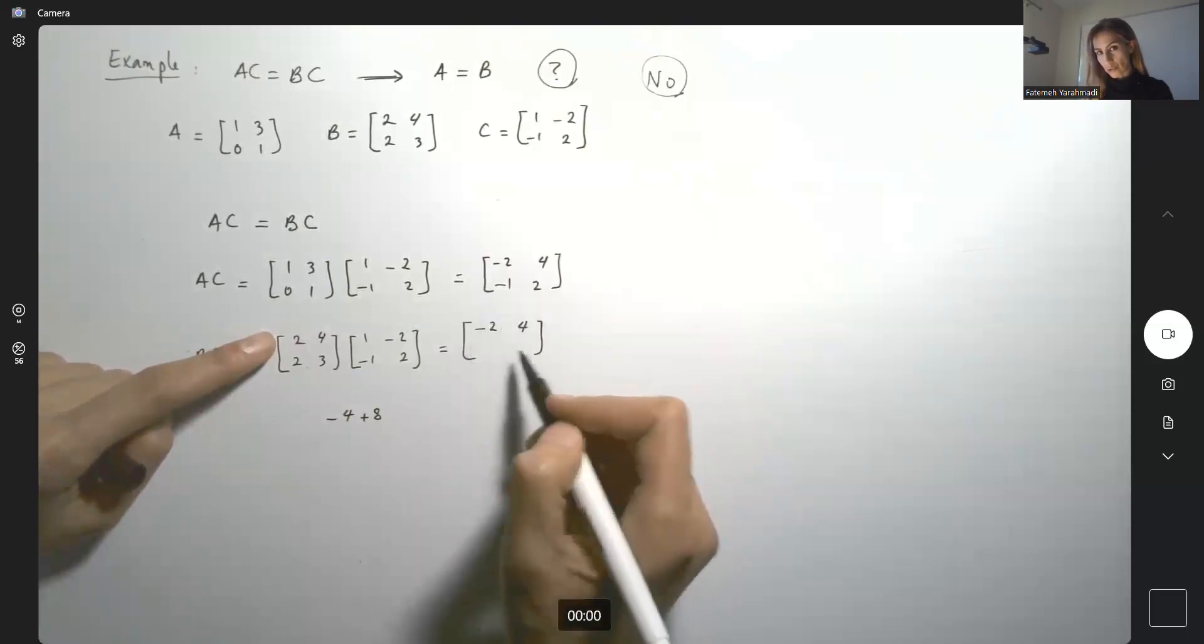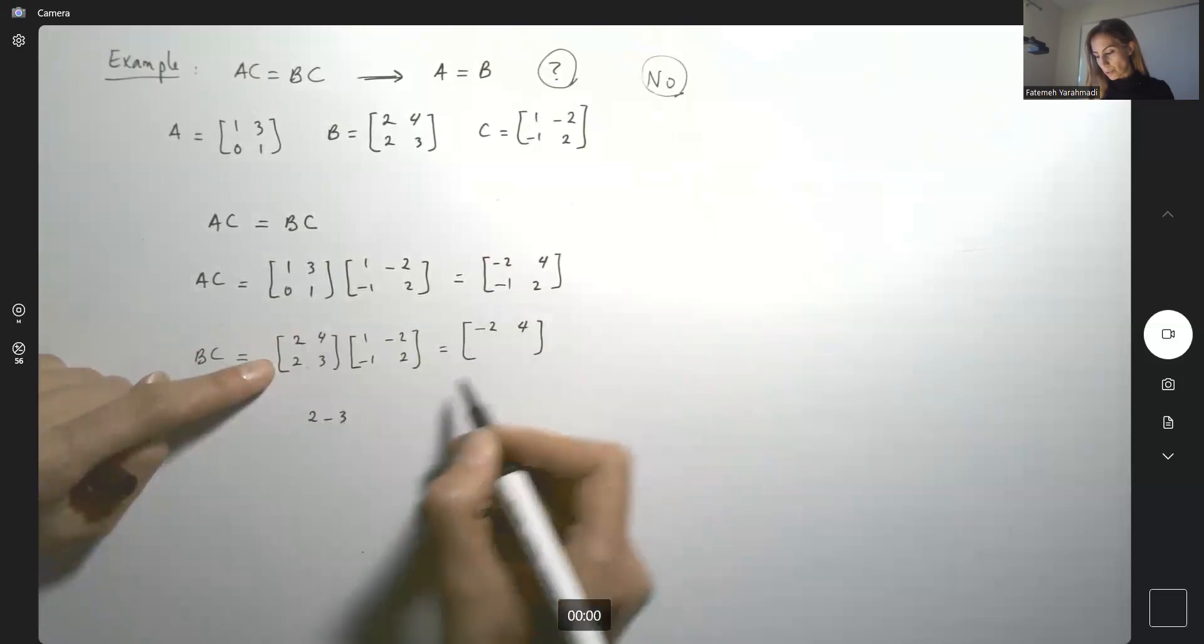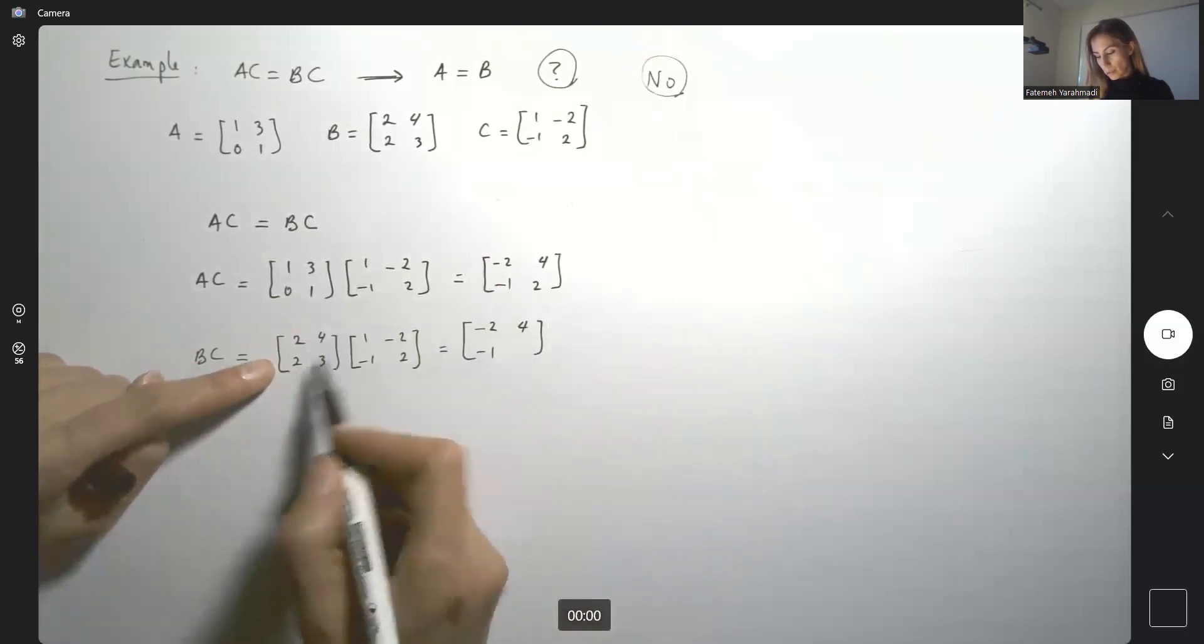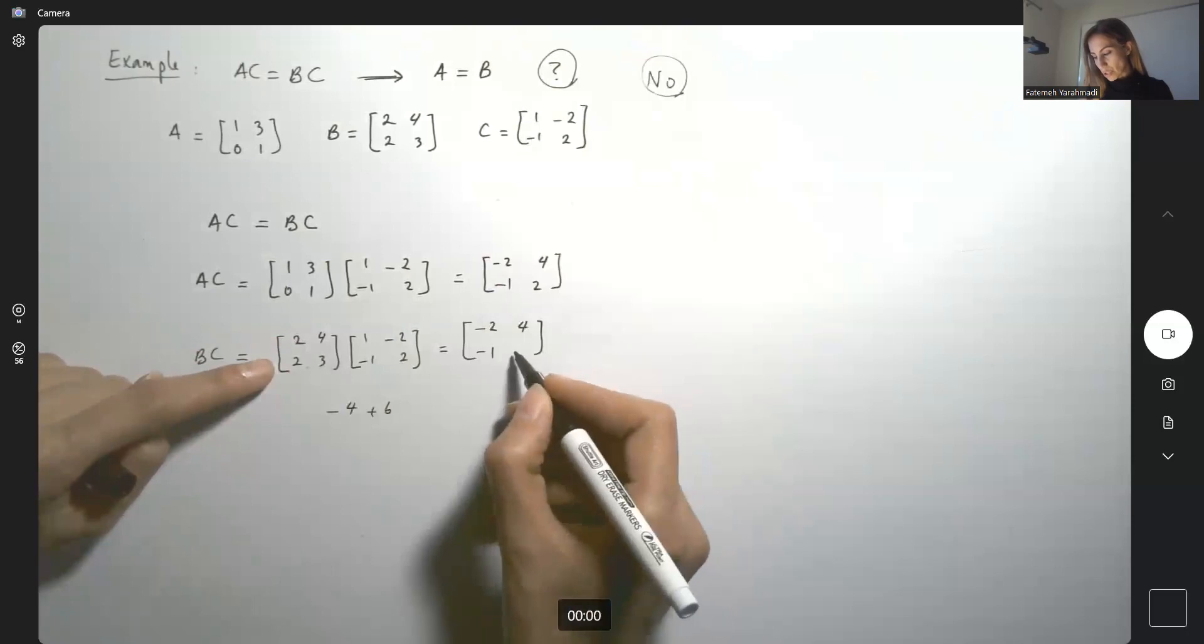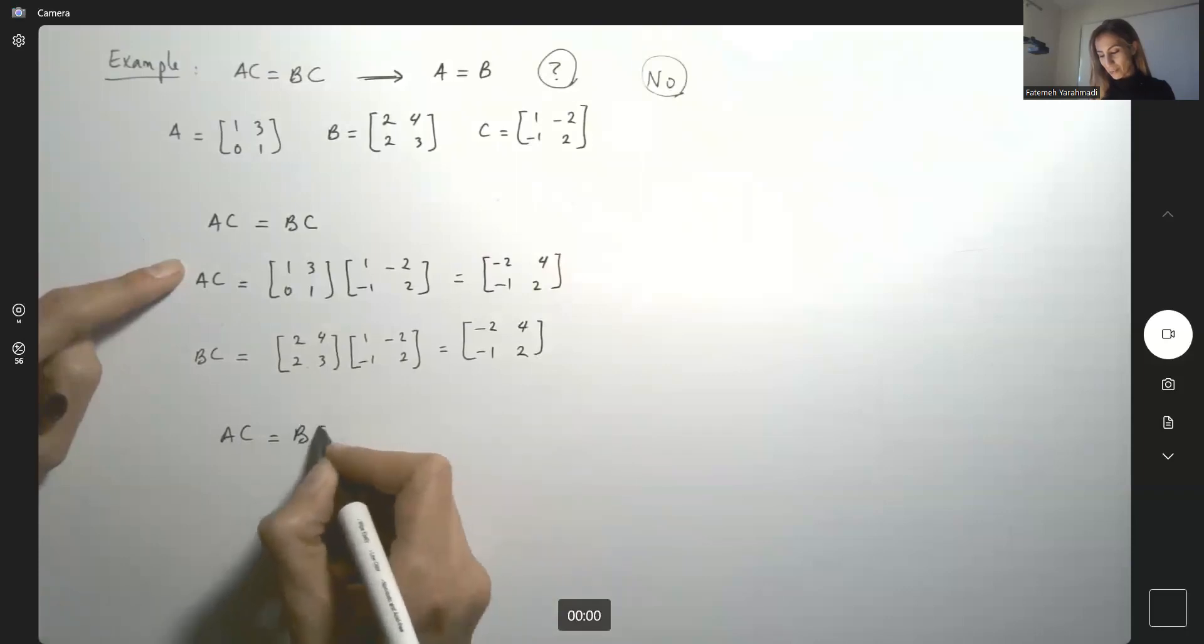So obviously the first two rows are the same. Now 2 times 1, 2, minus 3, negative 1. And then 2 times negative 2, negative 4, plus 6, which is just 2. So obviously AC and BC are the same thing. AC is equal to BC.